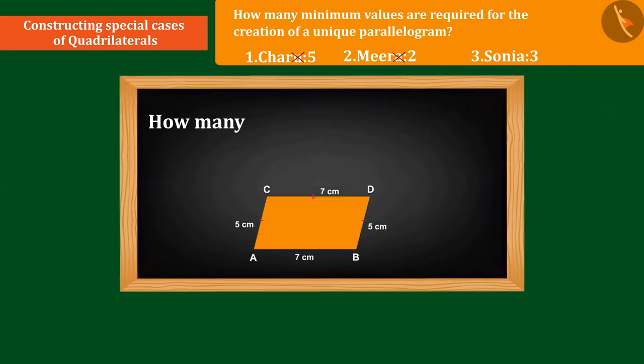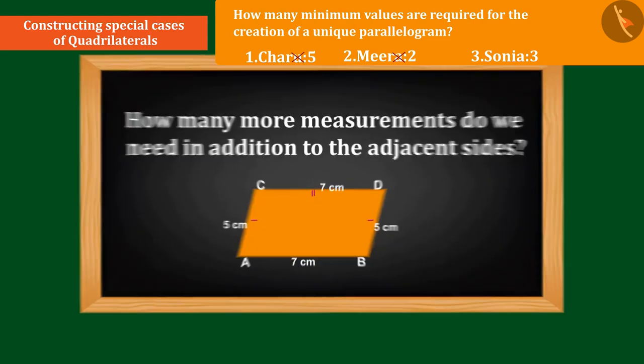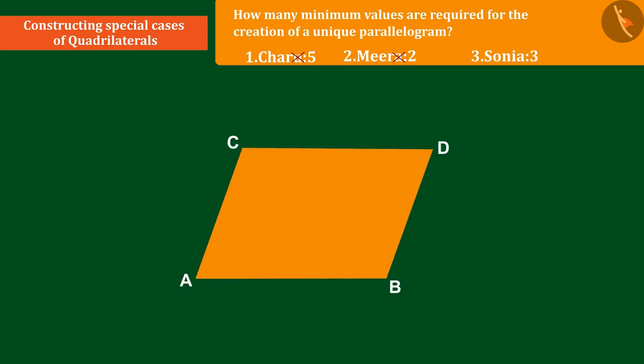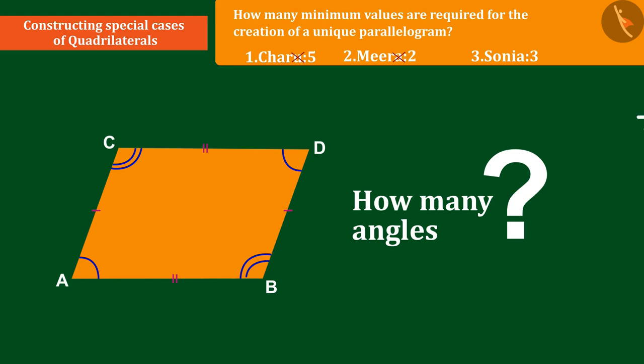Now, the question is, how many more measurements do we need in addition to the adjacent sides? We have the measurement value of all the sides of a parallelogram. So how many angles will make a unique parallelogram?